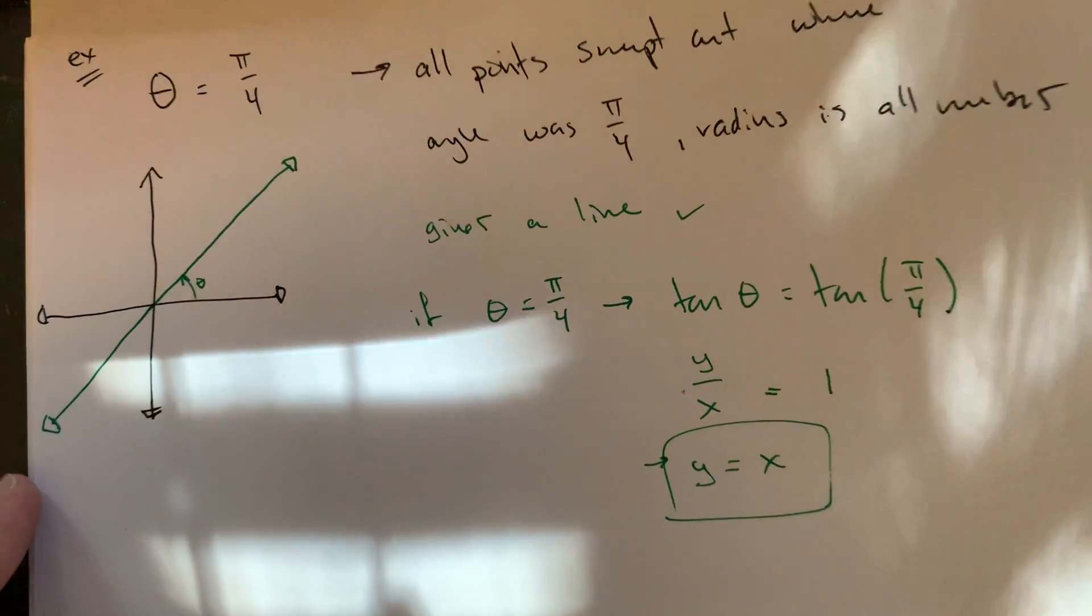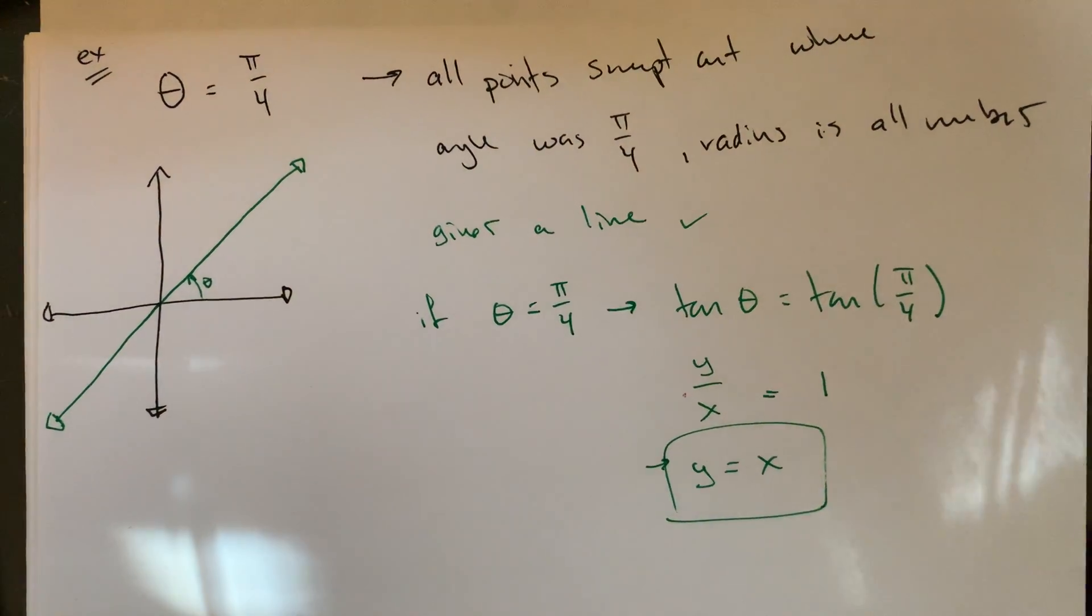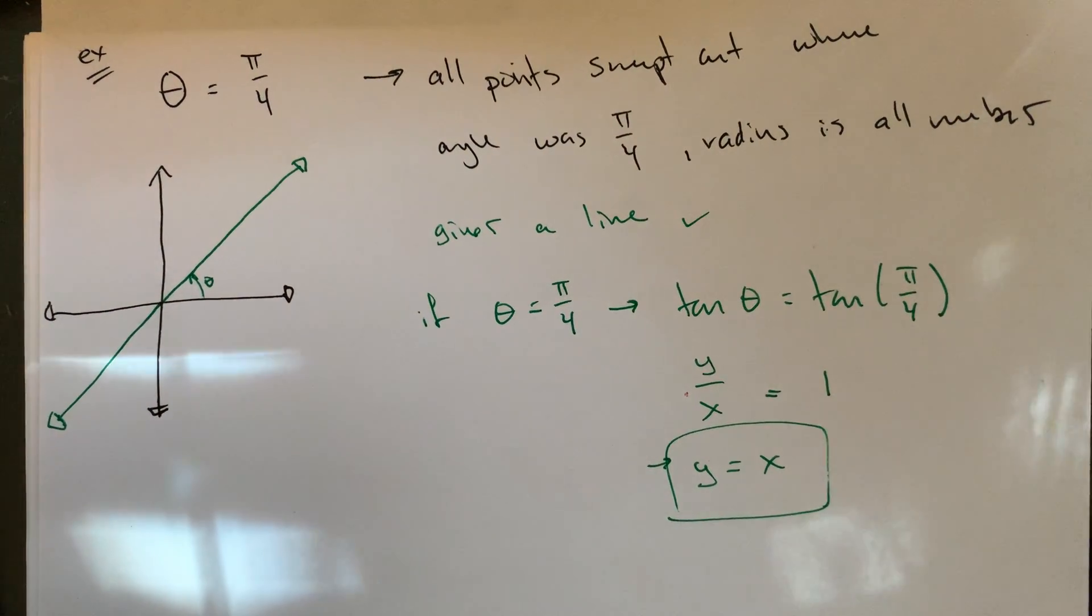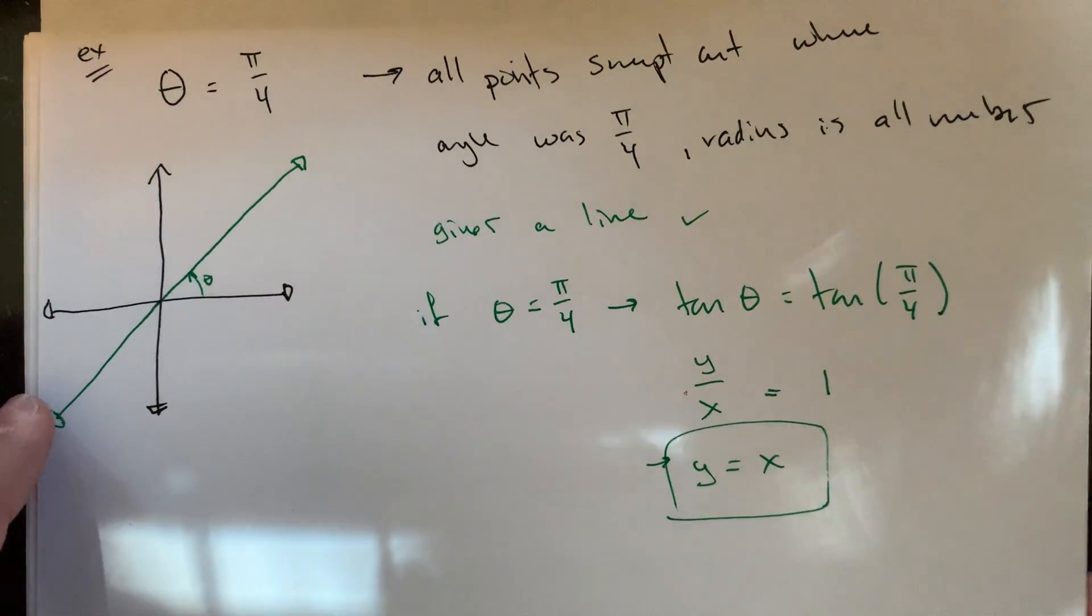Any kind of angle, theta equals angle is going to give you some sort of line going through the origin, either kind of positive slope or negative slope. You can use tangent of the angle to kind of get a different version of it.